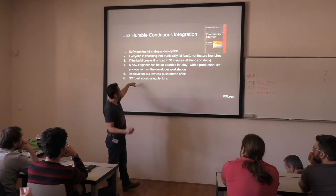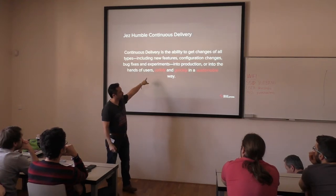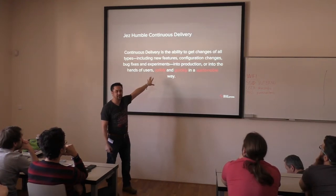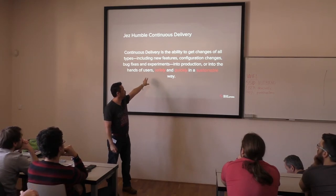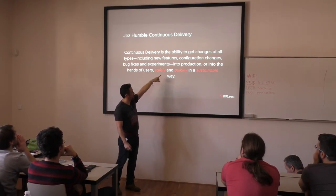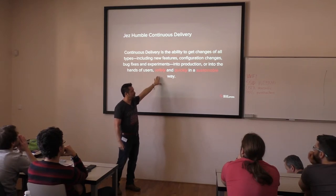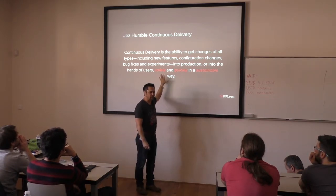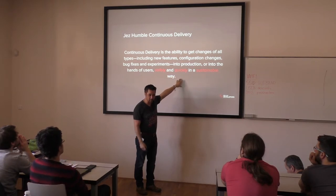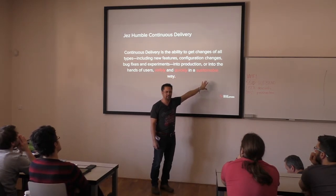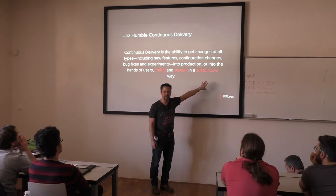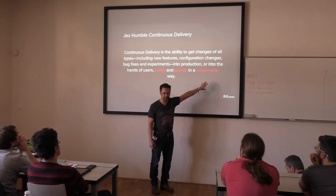Trunk is always deployable. Everybody checks into trunk. Every build is ready to rock all the time. The build does not break, and if it does, fixing it is a religious event. It's not about using Jenkins. Continuous delivery is specifically so that we know the software we've produced is ready to go — ready for production, ready for users safely, quickly, and in a sustainable way. People aren't working 24 hours a day to make this work.